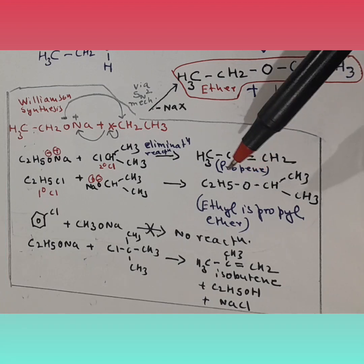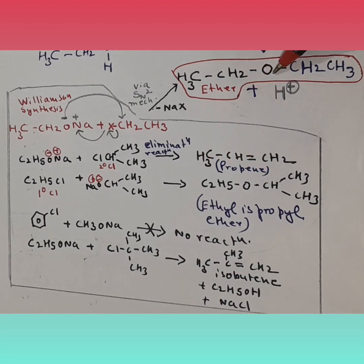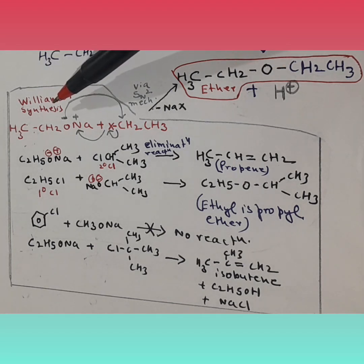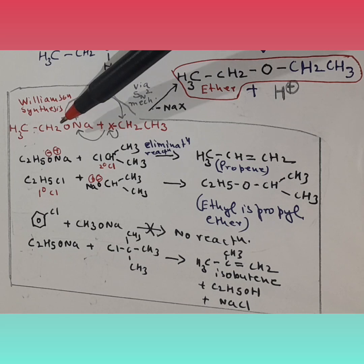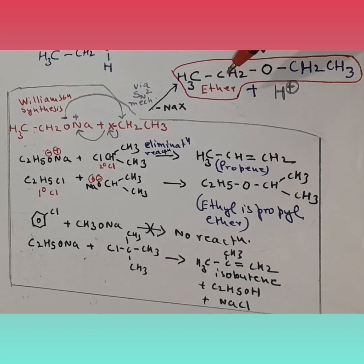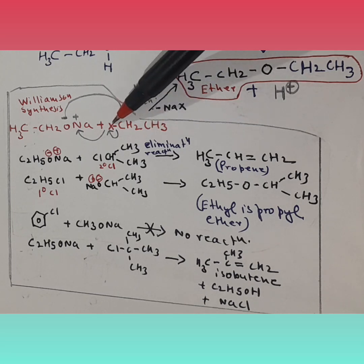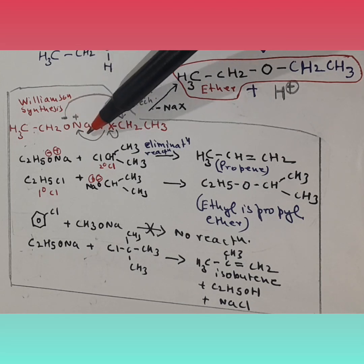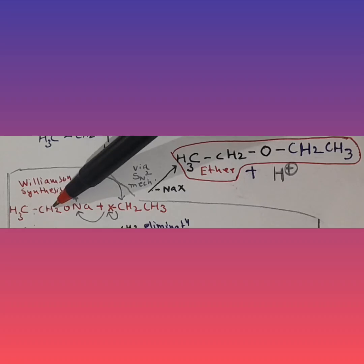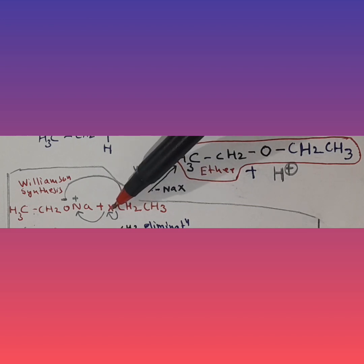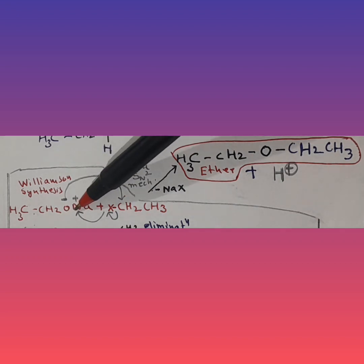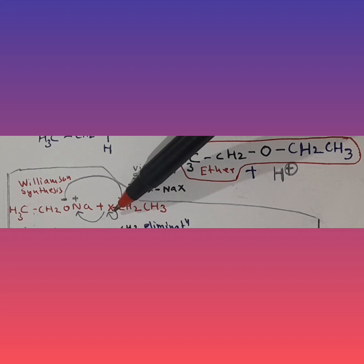Now let's understand the next methodology: Williamson synthesis. We take sodium ethoxide and ethyl halide under dry conditions (dry ether). Sodium ethoxide reacts with a primary alkyl halide. Cl, being electronegative, pulls the electron bond pair towards itself, forming NaCl.